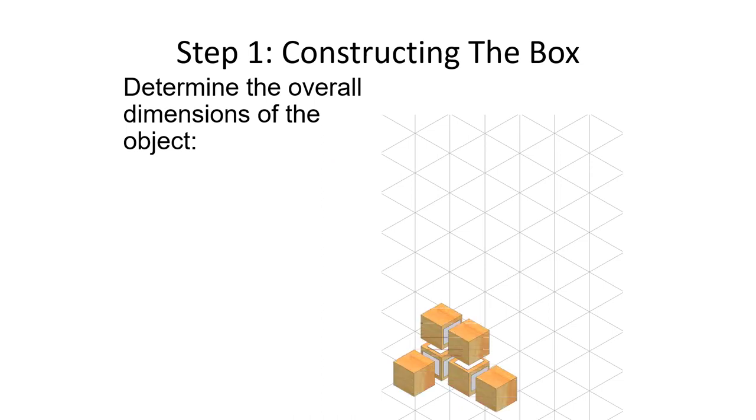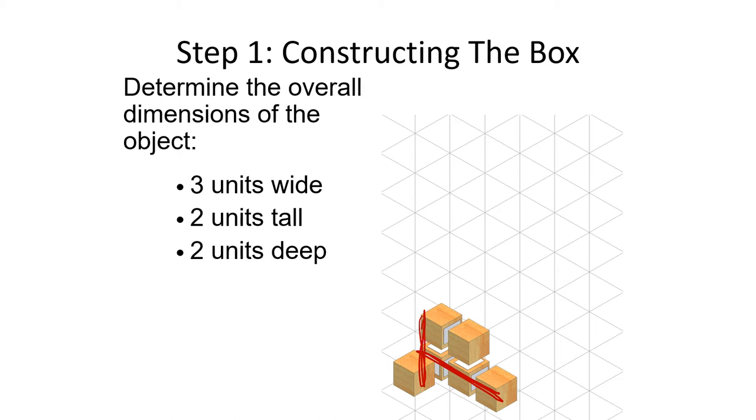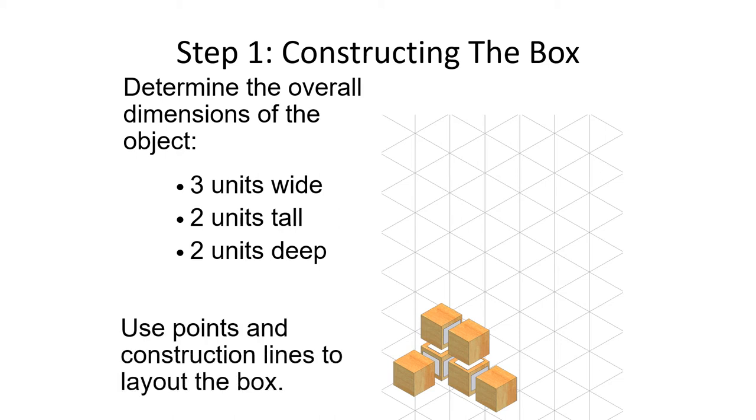So here's how they do it. I don't know why they changed that picture like that. I guess they're trying to show you counts of the boxes. So it's three units wide this way, two units tall this way, and two units deep this way. I guess they were trying to show how it's too deep. Use points and construction lines to lay out the box.